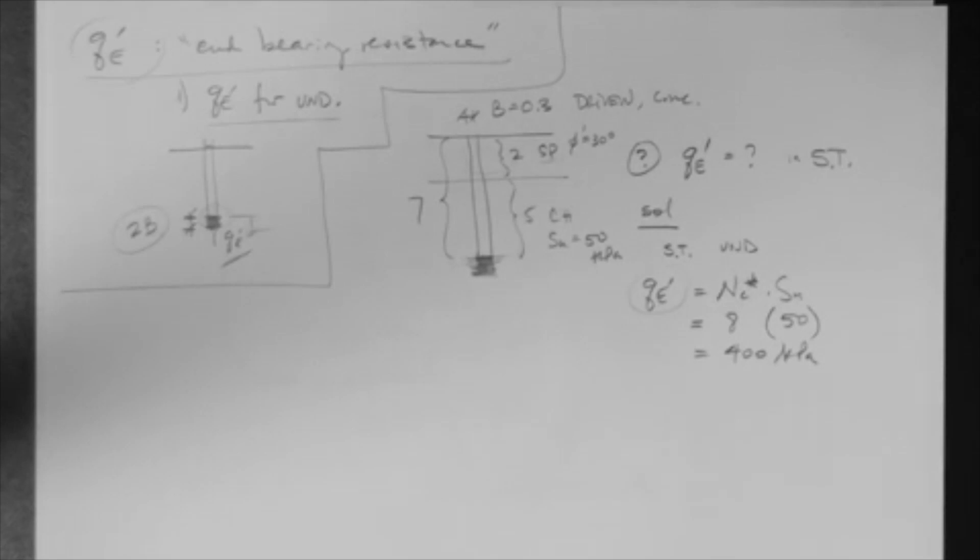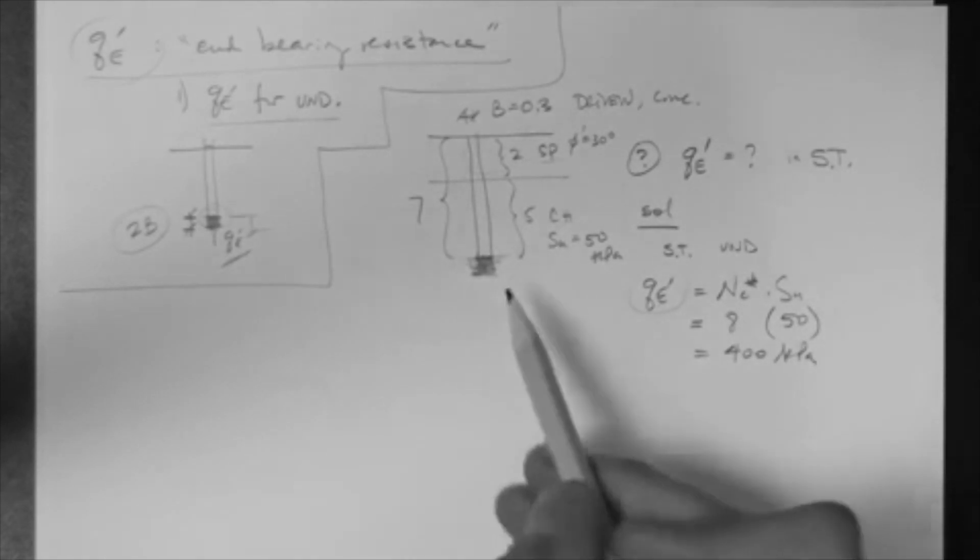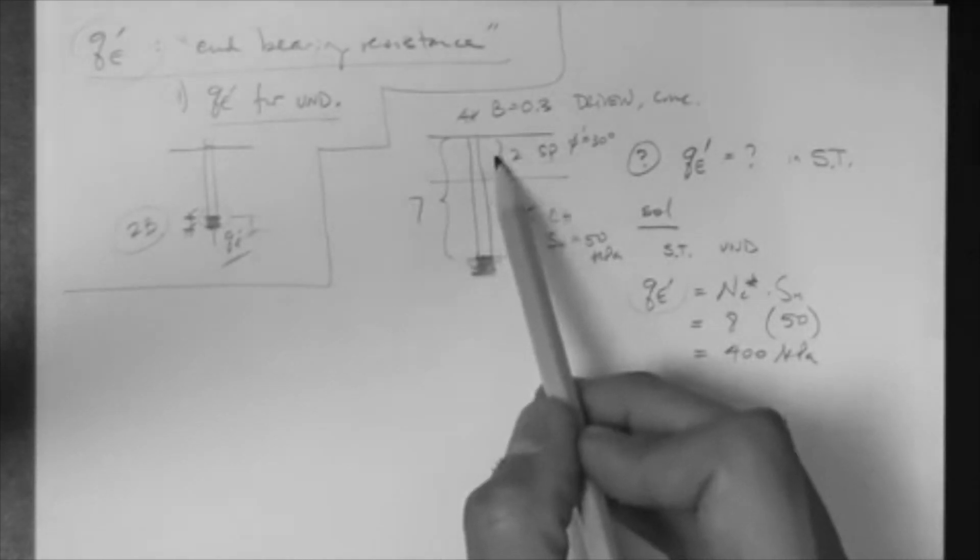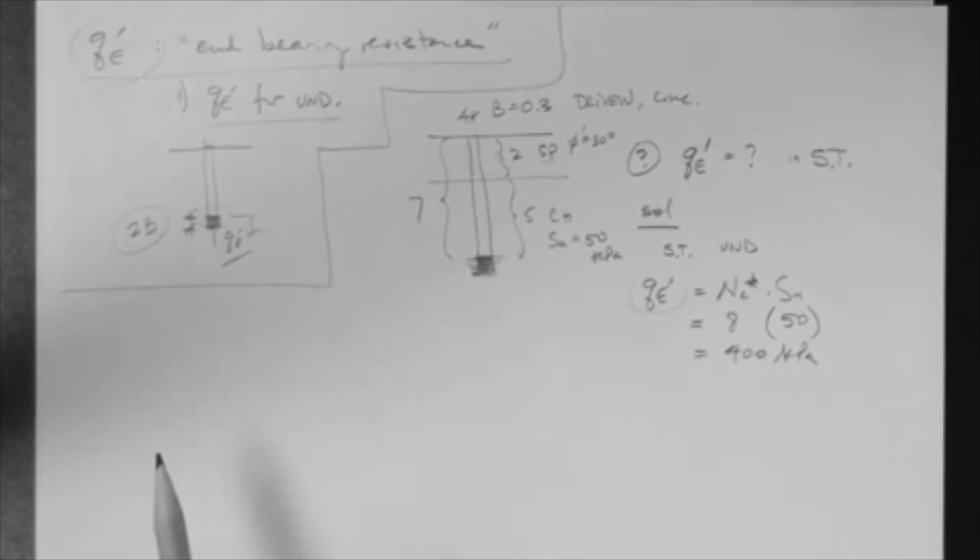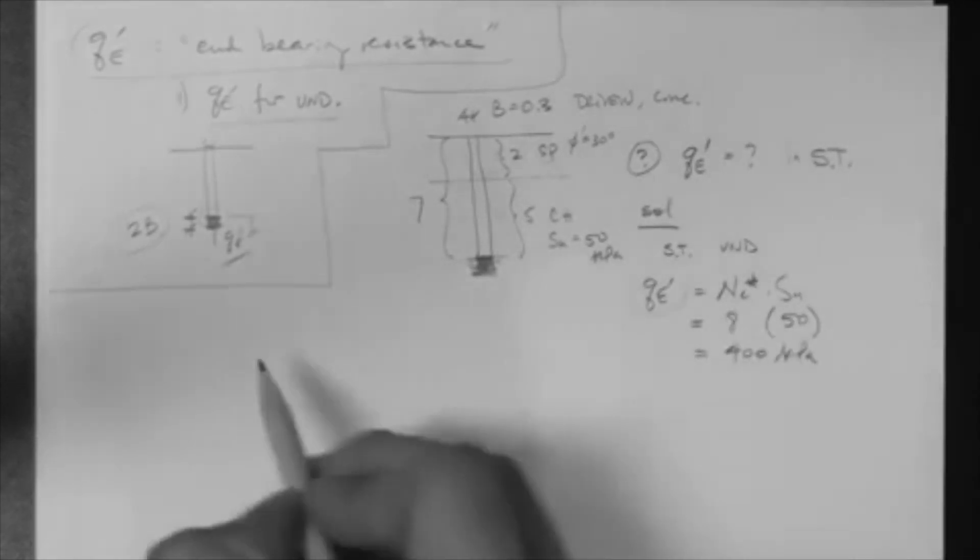There's only one end to the pile. Whereas, for side friction, there could be more than one Fs, obviously. For example, in this case, we have two Fs. But, there's only one Qe always, because there's only one end of the pile.